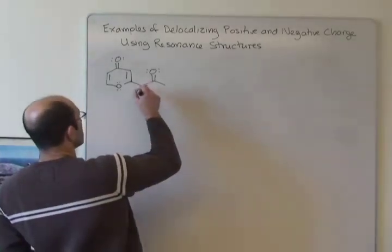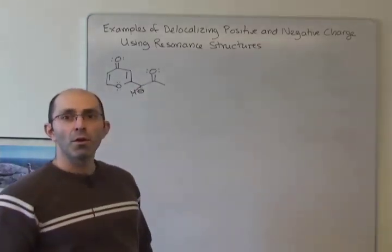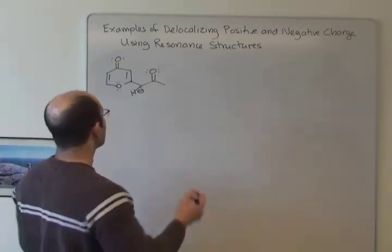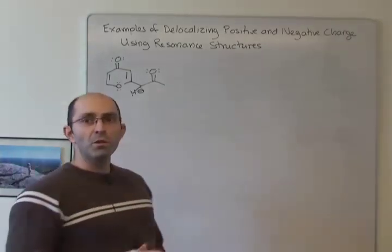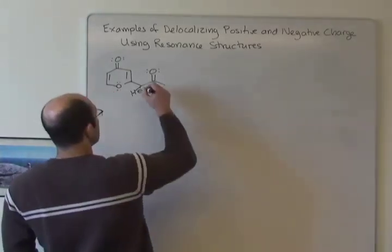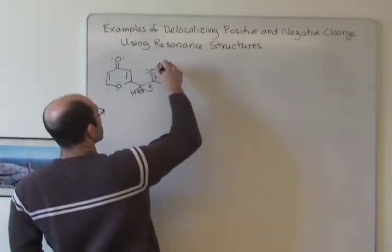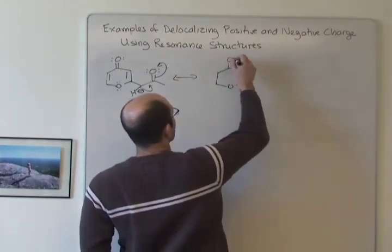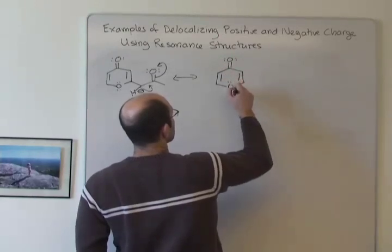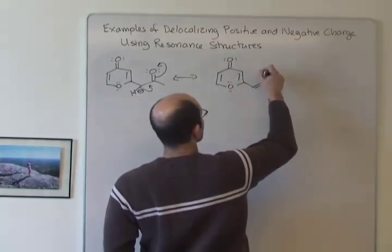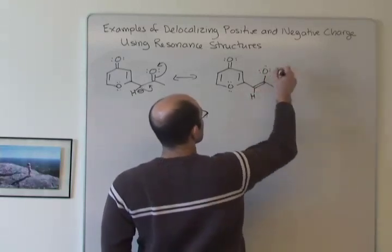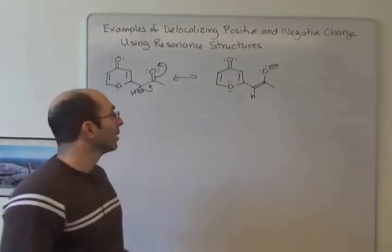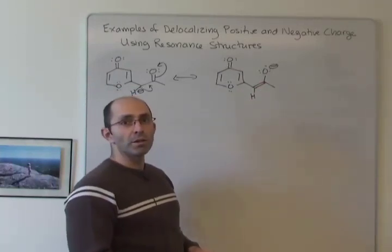When we look here, it's important to draw in that H so that we're clear the carbon that's charged has an octet. Instead of having four bonds, it has three bonds and a lone pair. We're looking for p orbitals that we can move the lone pair electron toward. So we can move that pair of electrons towards the carbon-oxygen double bond and put that negative charge onto the oxygen. We can't do anything else with the charge going in that direction.